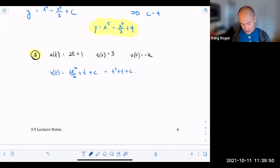And I want to use the initial condition to solve for C. So I'm going to get V of zero is equal to zero squared plus zero plus C. The left-hand side they gave us is negative two. The right-hand side is just C. So my final answer is going to be V of T is equal to T squared plus T minus two. That's the velocity function. Any questions about that?